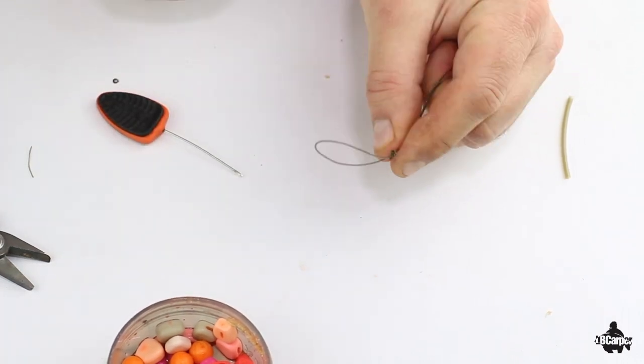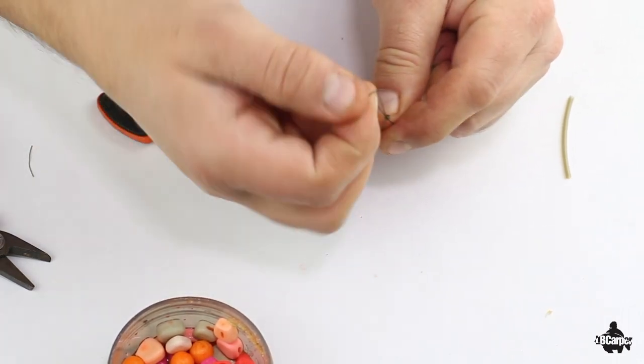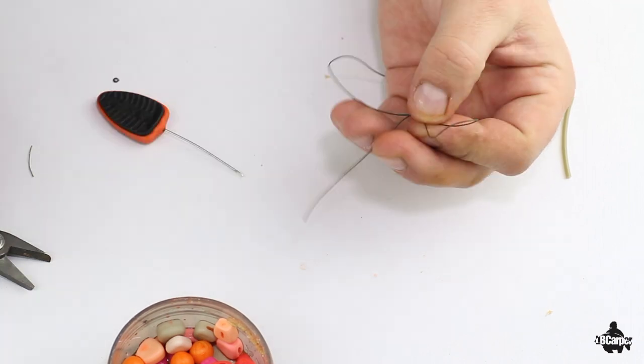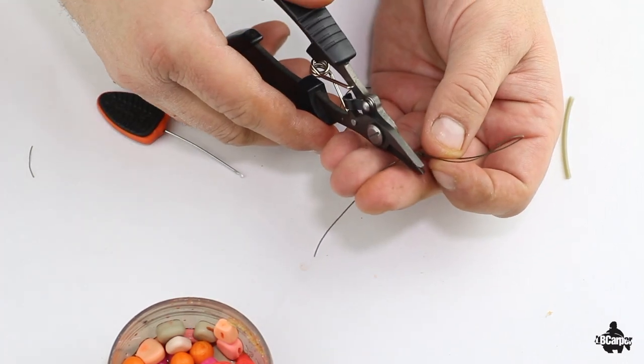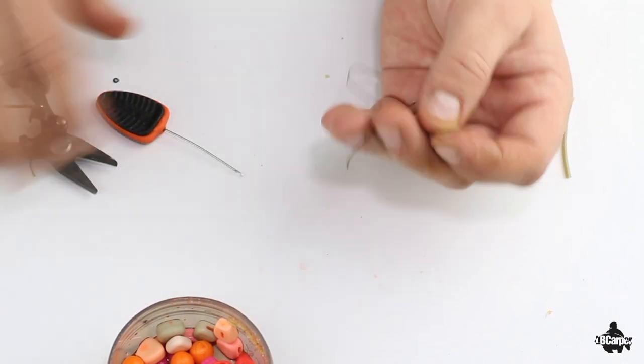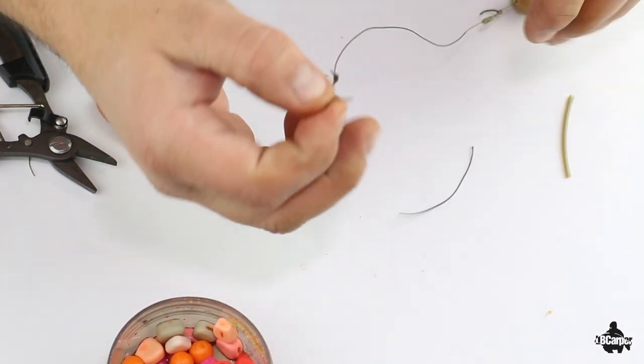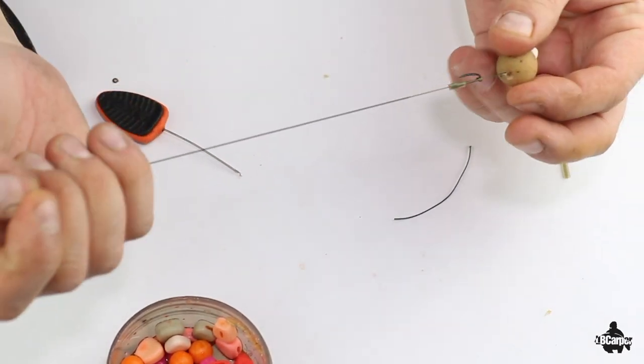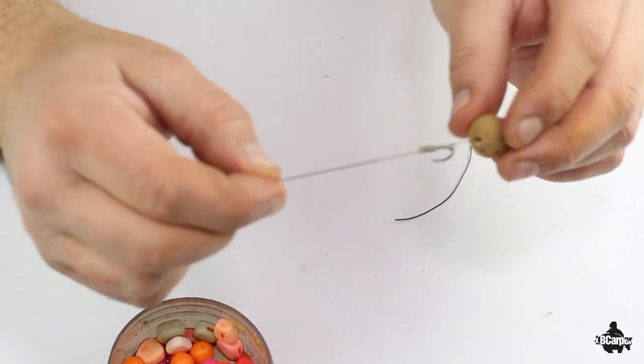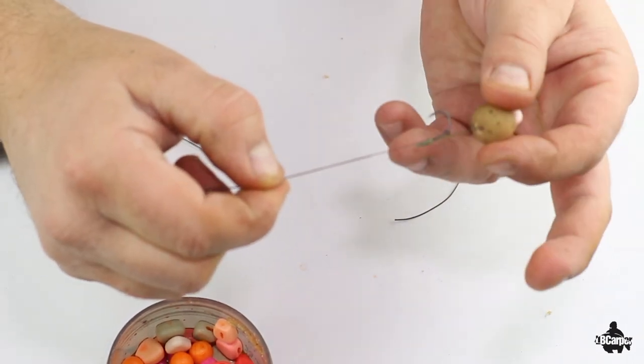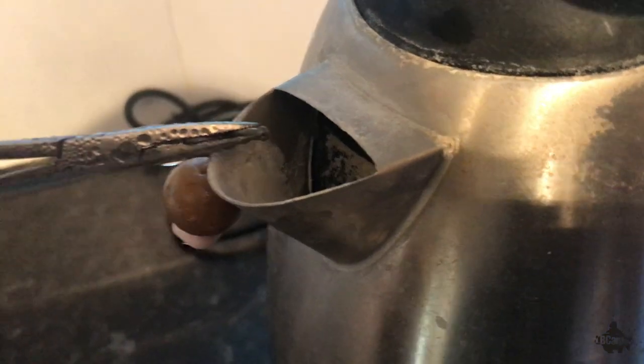Nice loop there. Trim him down. There we go. Now all we need to do is use the kettle and shrink that down.